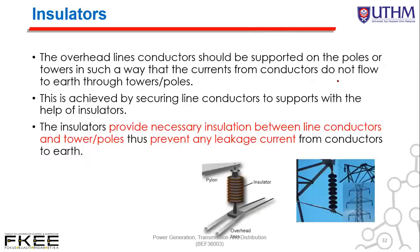Now let's look at the insulator. The function of the insulator is to insulate. The line conductors should be supported on poles or towers in such a way that the current from the conductor does not flow to earth through the tower or pole. This is achieved by securing the line conductor to the support with the help of insulators. The insulator provides the necessary insulation between the line conductor and the tower pole to prevent any leakage current from the conductor to the earth.